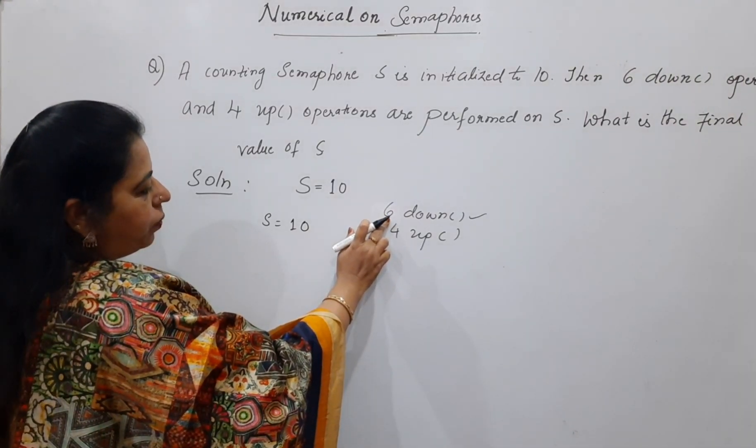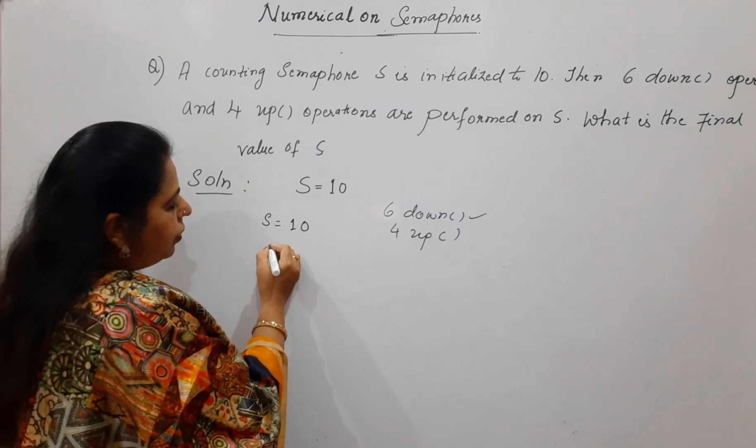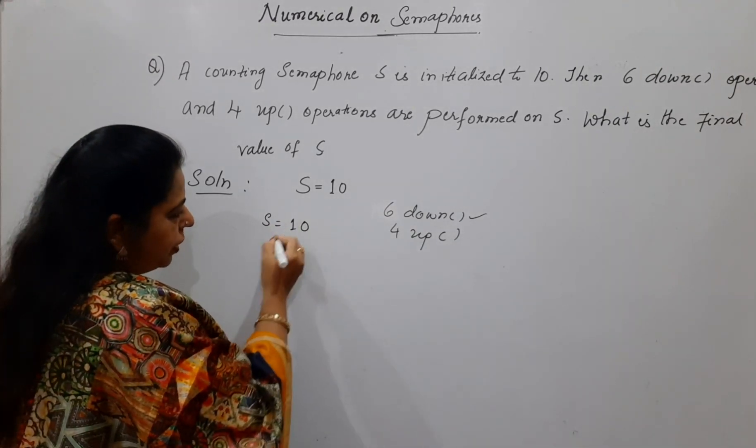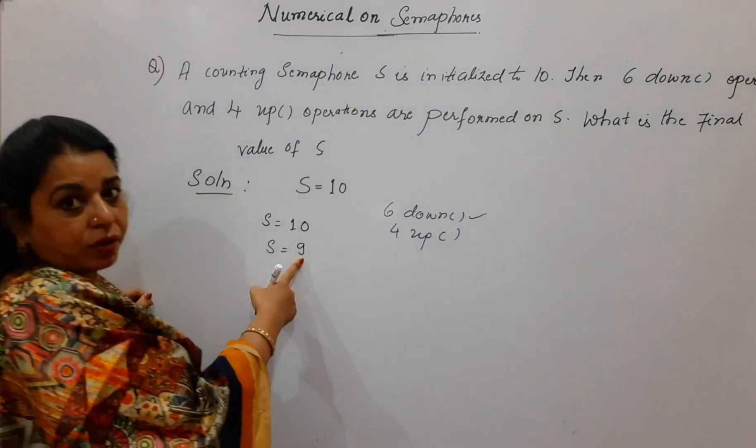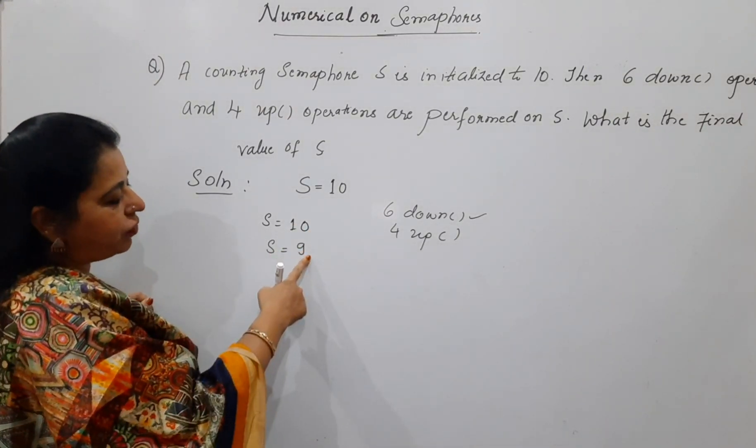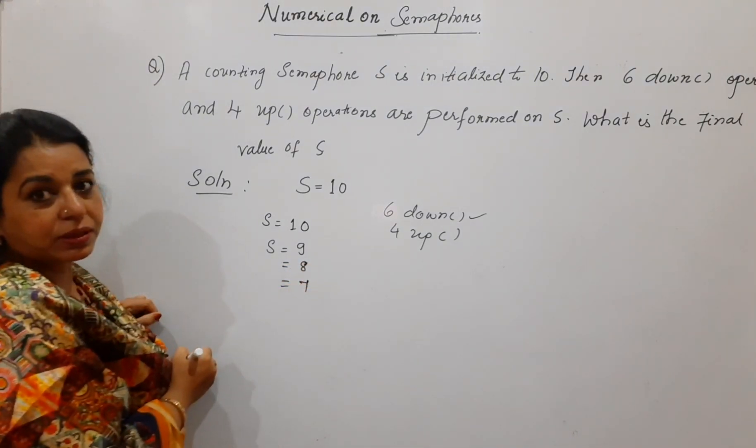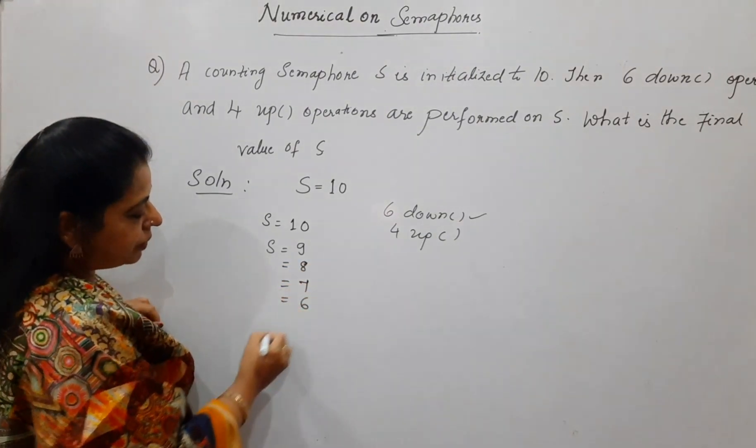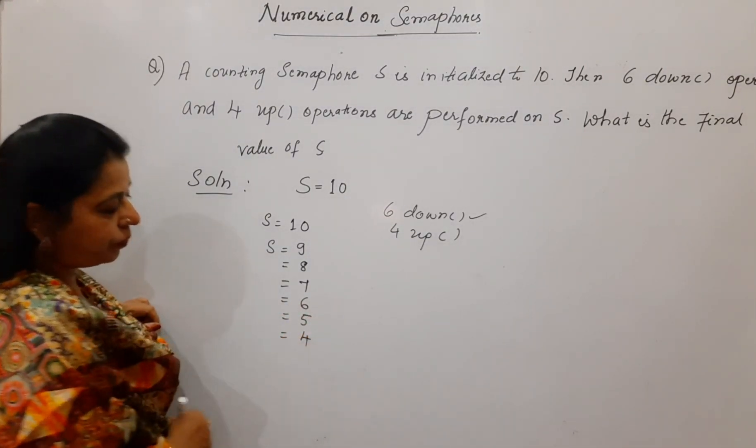You have to perform 6 down operations. When you perform the down operation for the first time on this semaphore, your value becomes 9. It will decrement the semaphore value by 1. Next time it becomes 8, next time it becomes 7, then next it will become 6, next it will become 5, next it will become 4.